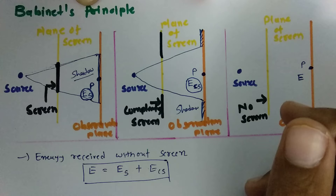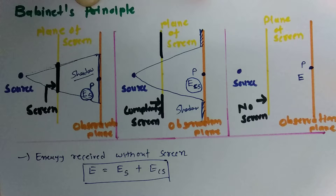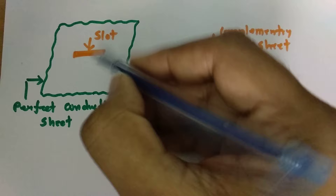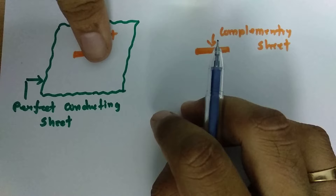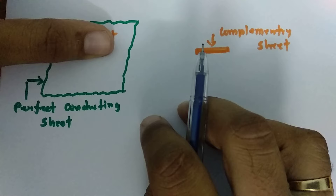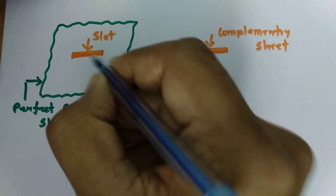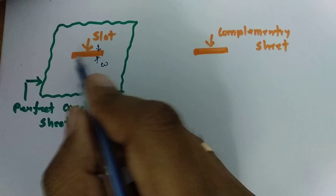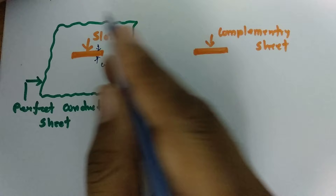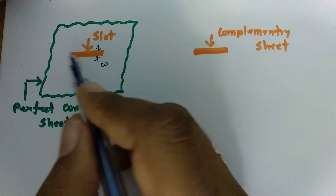Let us try to understand how we can apply that to antenna applications. First, what I am considering is a perfect conducting sheet — initially there is no slot. This perfect conducting sheet has conductivity which is maximum, ideally infinite. Now what I do is I provide a slot in that of width w. One can see there is a slot there, and this slot in the perfect conductor will function like a slot antenna — we will discuss that later — but right now just consider I have provided a slot here in the perfect conducting sheet.